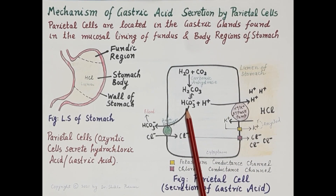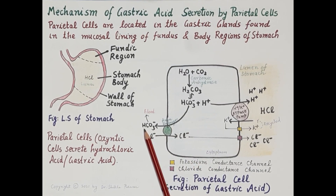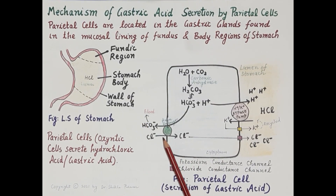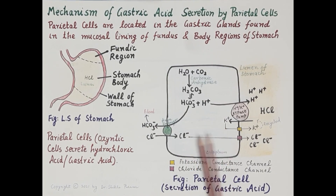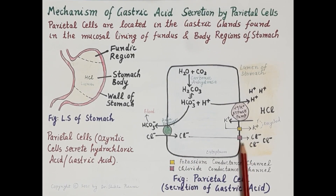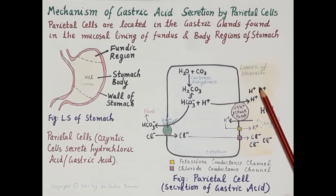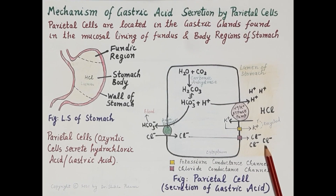On the other hand, bicarbonate ions are transported out of the cytoplasm of parietal cells into the blood by an anion exchanger. This anion exchanger, shown here in green, is a transporter protein that moves bicarbonate ions into the blood while chloride ions are transported into the cytoplasm of parietal cells.